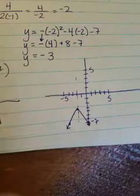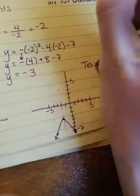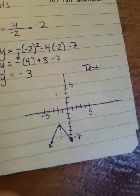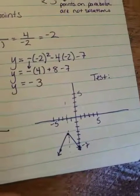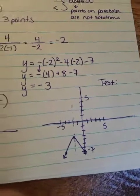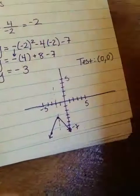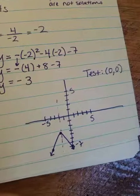And just like most of you did with the lines, you want to test a point. And if you remember back with the lines, the easiest point to test is 0, 0. The only time you cannot use 0, 0 is if the parabola goes through 0, 0. So it is not going through 0, 0, so I can use it.